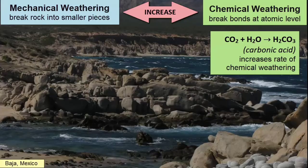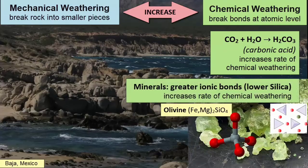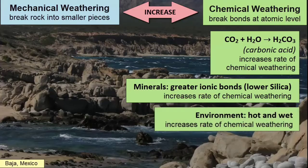What else can speed up weathering? Rock type and climate. Minerals with the strongest covalently bonded silicon-oxygen tetrahedra, such as quartz, have the strongest bonds and are least likely to be dissolved by water. Chemical weathering will happen very slowly with these minerals. On the other hand, minerals with weaker ionic bonds or good cleavage will dissolve more readily. In addition to rock type, the environment makes a big difference — chemical weathering requires water, so the wetter the climate, the more chemical weathering will occur. Heat also speeds up the rate of chemical reactions.